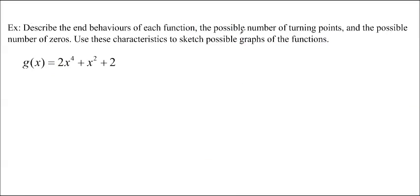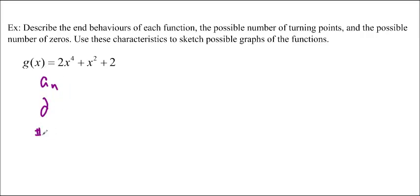So we're going to do it again. Describe the end behaviors of each function, the possible number of turning points, and the possible number of zeros. Then use those characteristics to sketch a possible graph of the function. Why don't you pause the video and try to do this, then come back when you're ready. Find the leading coefficient, the degree, the number of TPs, the number of zeros, and the y-intercept.